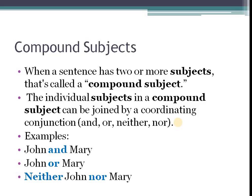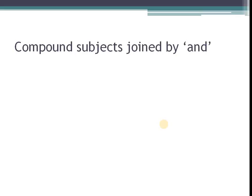And when we talk about compound subjects, we talk about when a sentence has two or more subjects, that's called a compound subject. The individual subject in a compound subject can be joined by the coordinating conjunction and or nor or neither nor. The examples, John and Mary, John or Mary, and neither John nor Mary. And once again, not going to get too much into neither nor because we're going to look at it when we come back to indefinite pronouns in our next lesson.